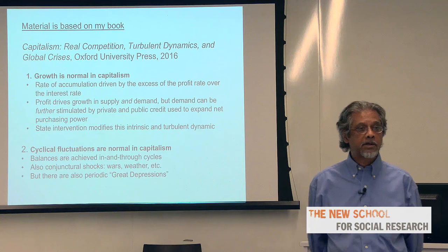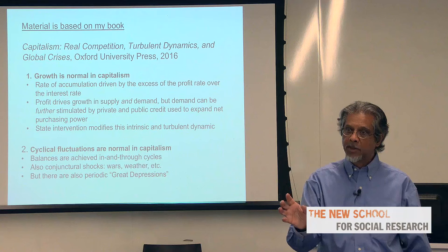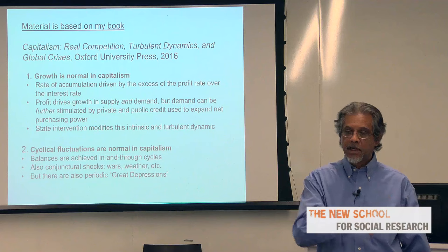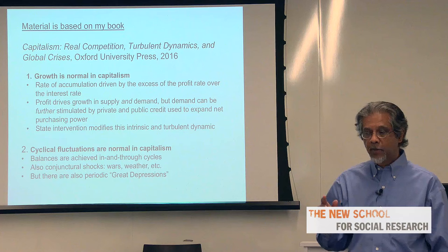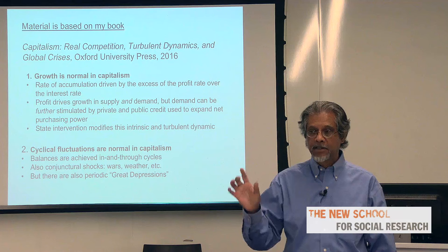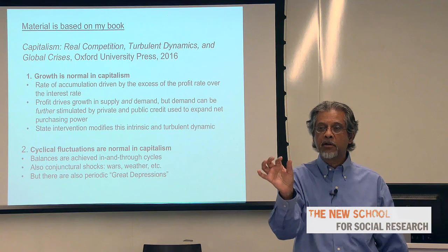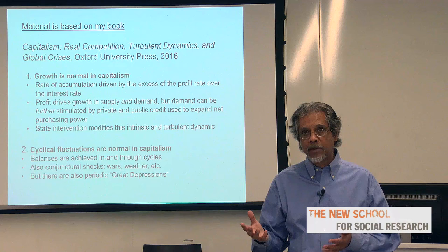The rate of accumulation is driven by the excess of the profit rate over the interest rate. In both Keynes and Marx, the rate of accumulation — investment over the capital stock — is driven by the profit rate minus the interest rate. The relevant profit rate is on new investment. Marx calls that difference the net rate of profit. Keynes makes identically the same argument in static terms: investment is driven by the marginal efficiency of capital, the rate of return on new investment minus the interest rate. As I show in the book, those are the same argument — Keynes in a static framework, Marx in a dynamic one.